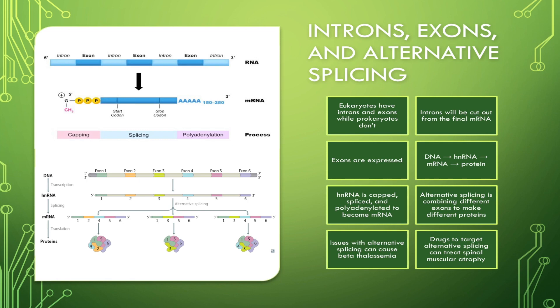Now, exons are expressed, so they are kept in and will be present in the final mRNA. As you can see here, the exons are kept in. You can also see the exons here are kept in, and they contribute to the final protein product. So exons have the actual genetic information that codes for proteins, and they will be present in the final mRNA.